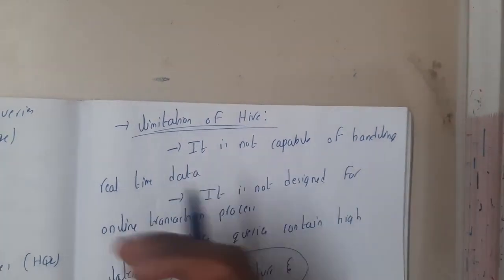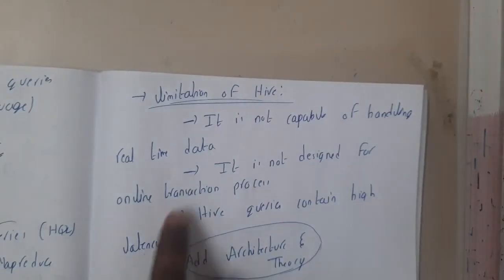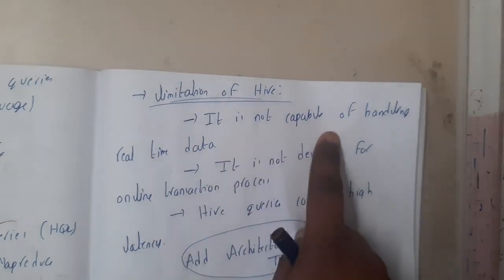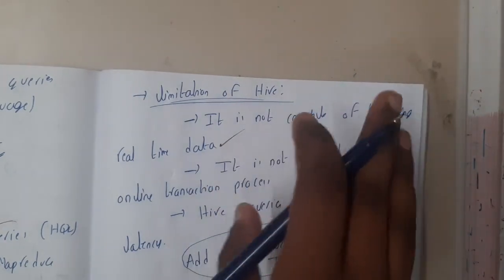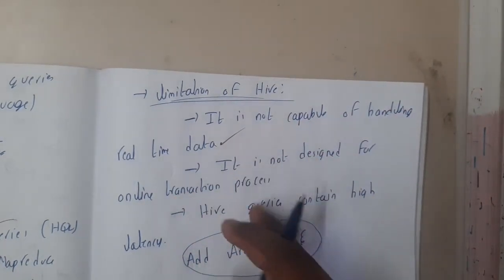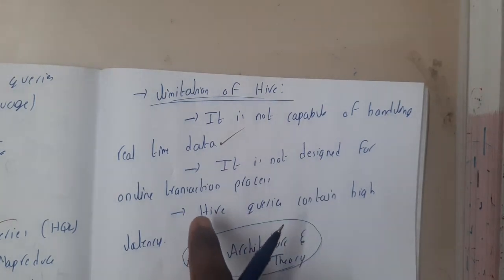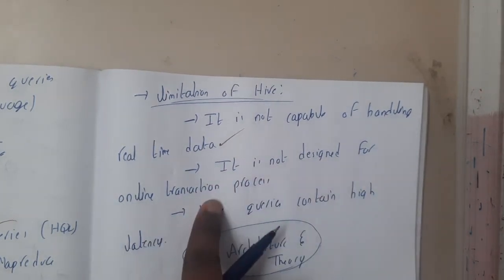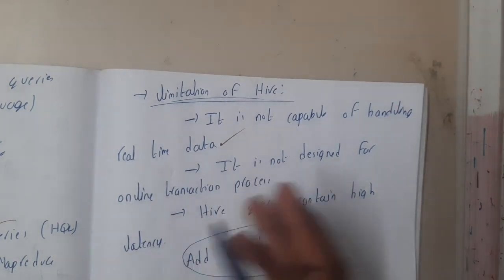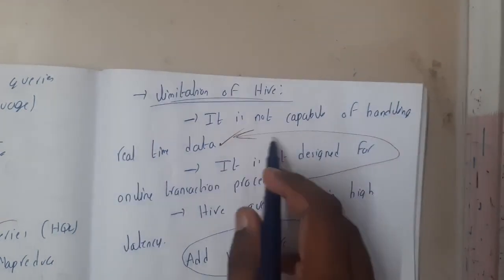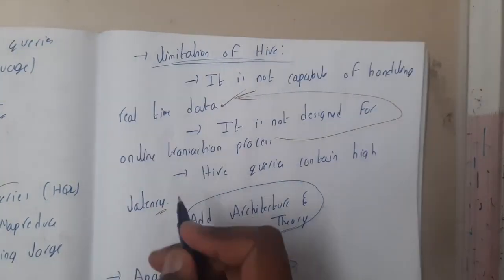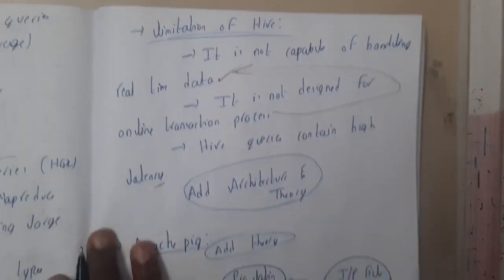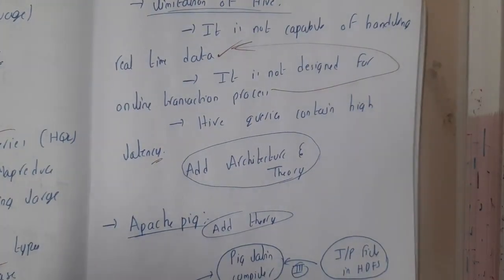Now let us go through the limitations of Hive. First, it is not capable of handling real-time data — real-time data analysis cannot be done properly with Hive. Second, it is not designed for online transactions, as those involve live data transfer which is difficult here. Third, Hive queries contain high latency, meaning it takes some time to execute and is not too fast.